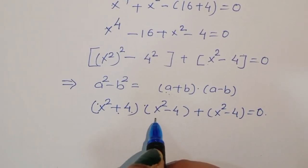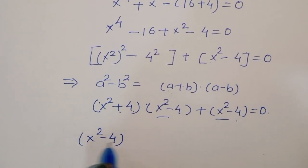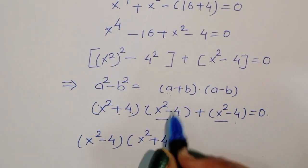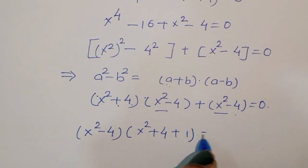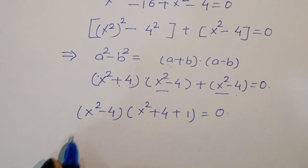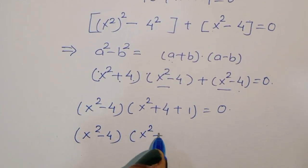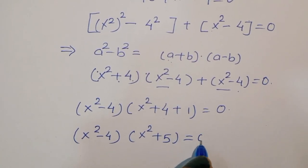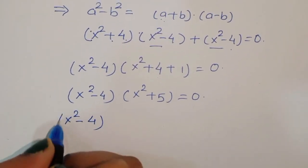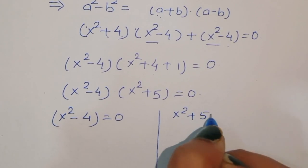Now, you can see that x square minus 4 appears in both terms. So we can take x square minus 4 as common: x square minus 4 times x square plus 4 plus 1 is equal to 0. This gives us x square minus 4 times x square plus 5 is equal to 0. We now have two solutions: x square minus 4 equal to 0, and x square plus 5 is equal to 0.